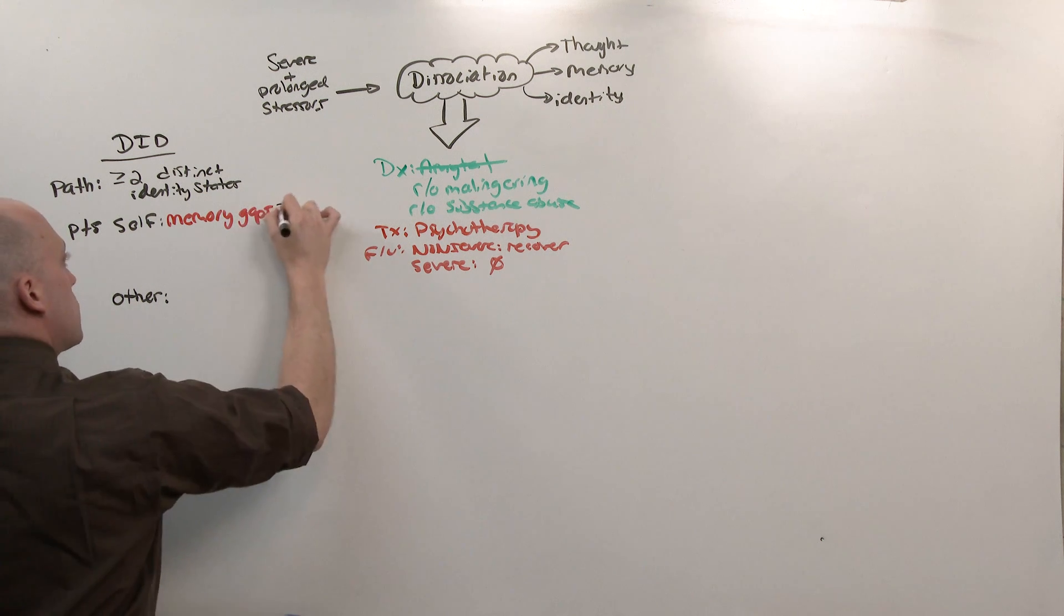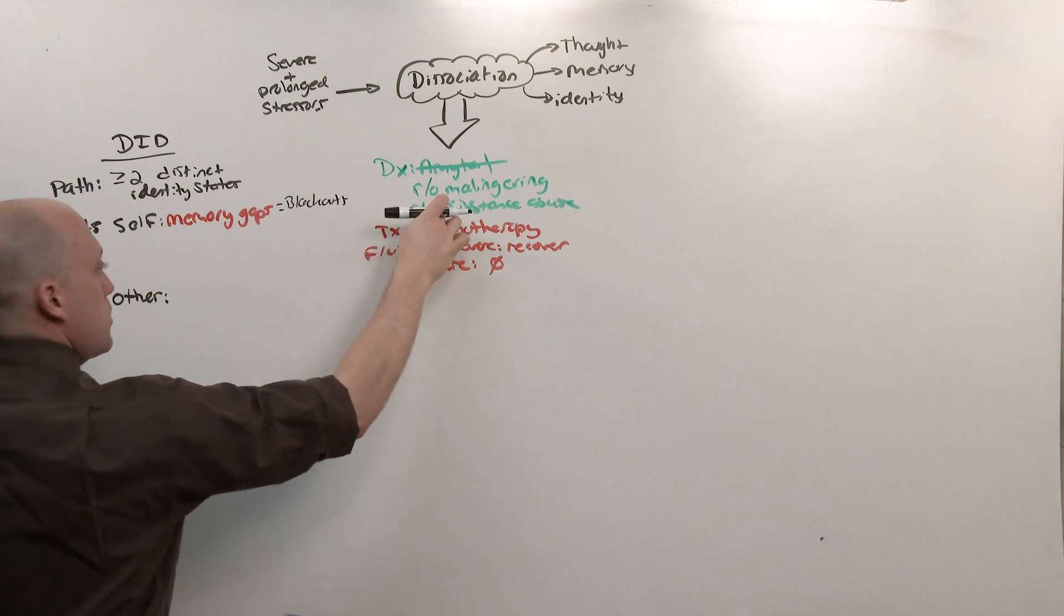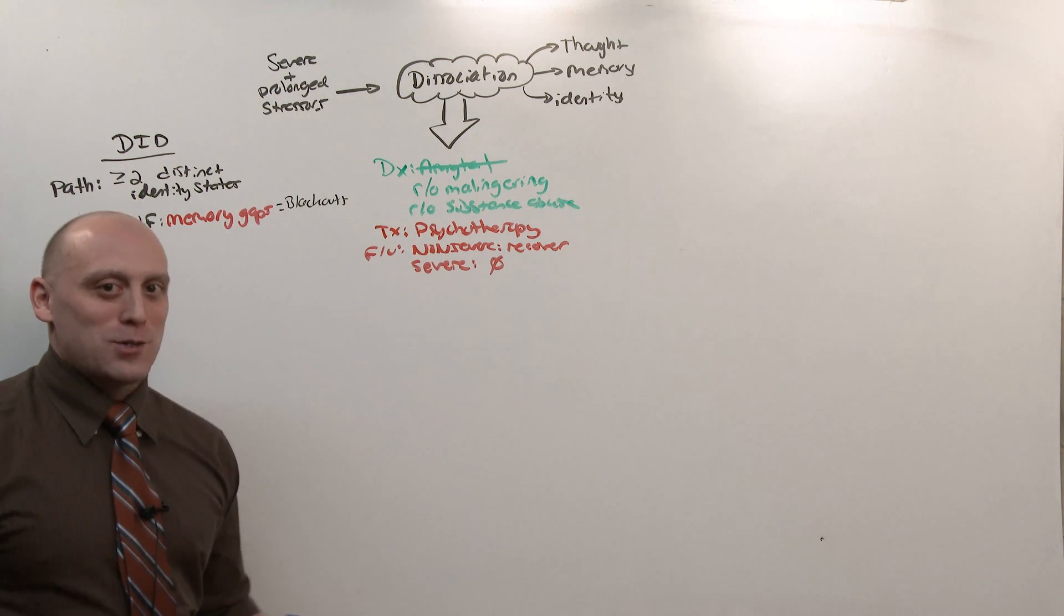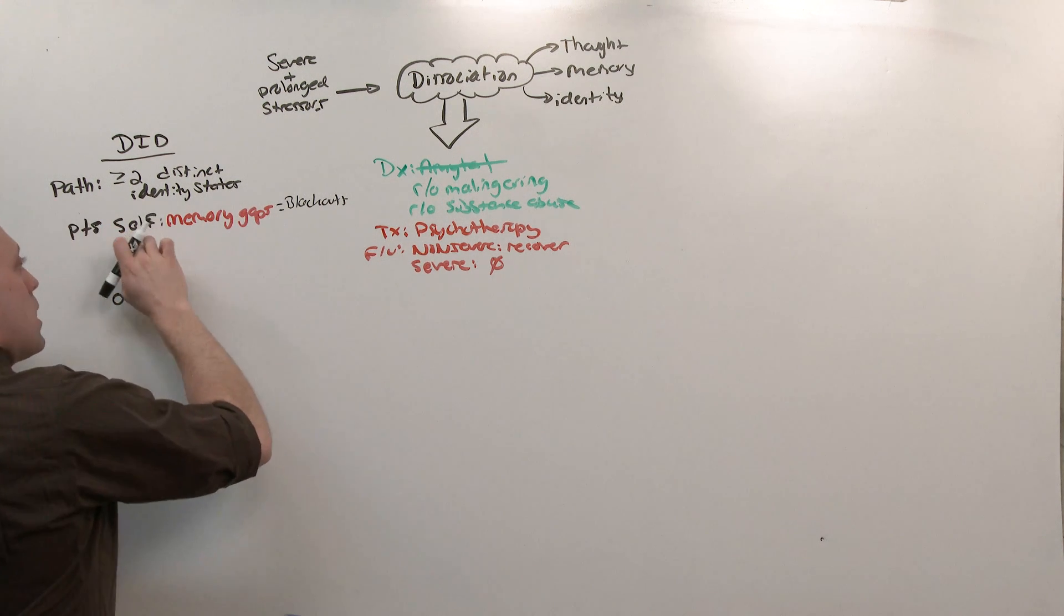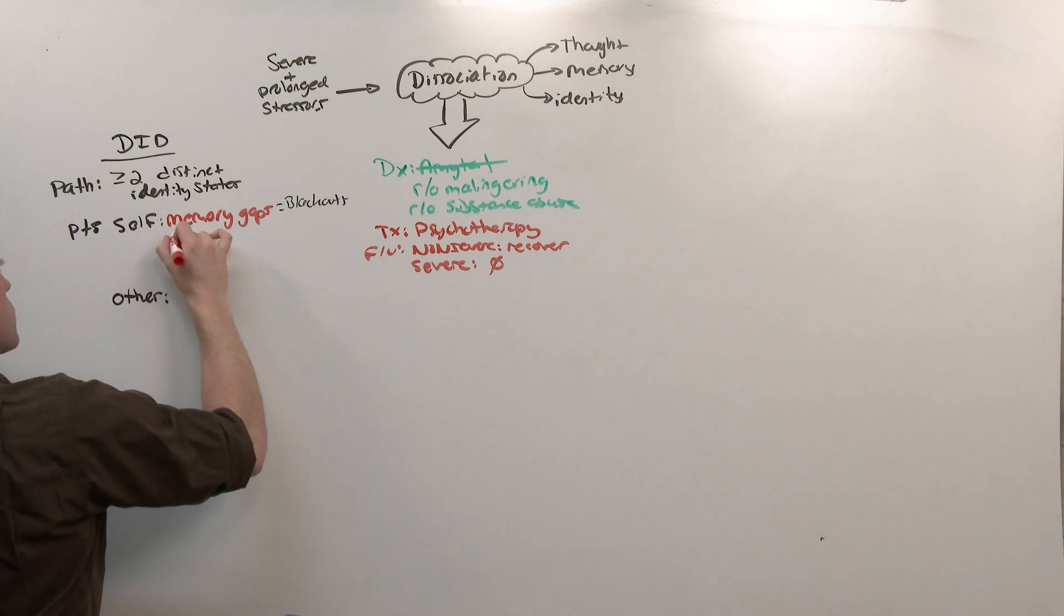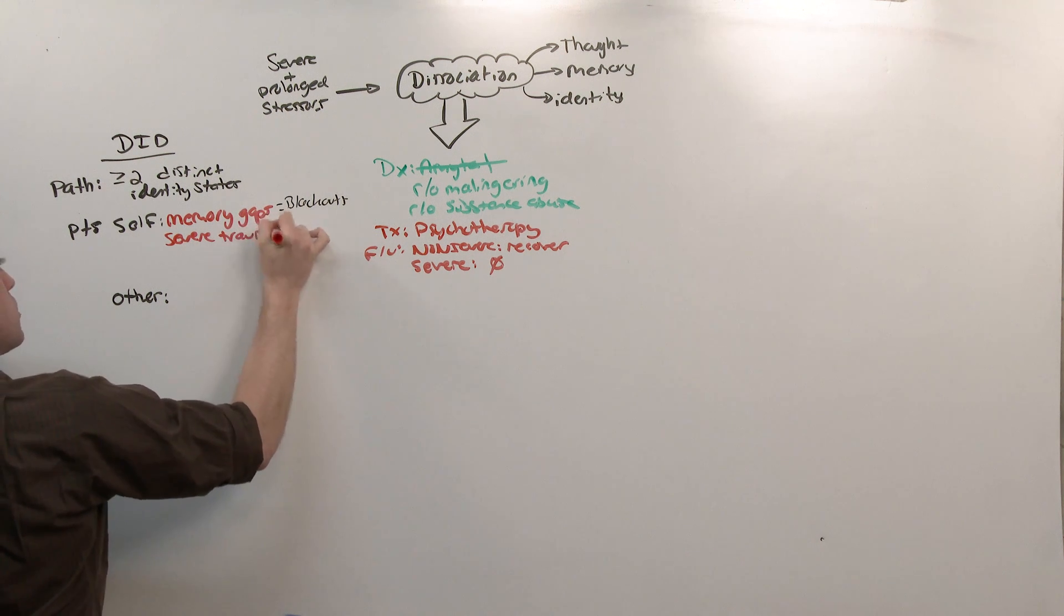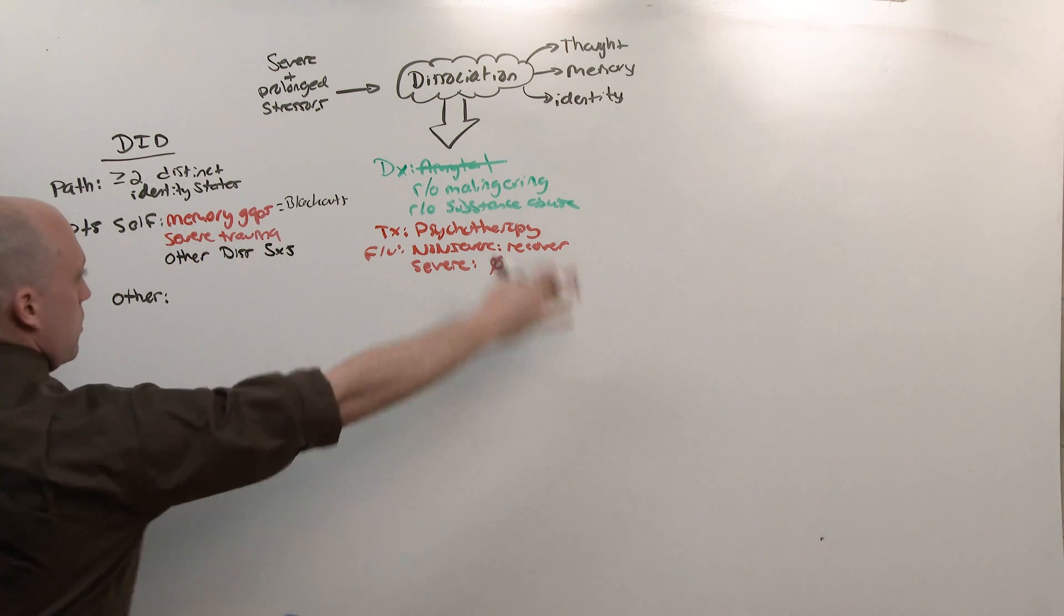So what happens is you'll see memory gaps. These are called blackouts. Again, you have to make sure that it's not substance abuse, particularly alcohol, because people act differently and don't remember as a response to alcohol or benzos. They experience blackouts and they usually have a history of severe trauma. And because dissociative identity disorder is the most severe, they might have other dissociative symptoms. That is everything that's going to follow in this lecture.